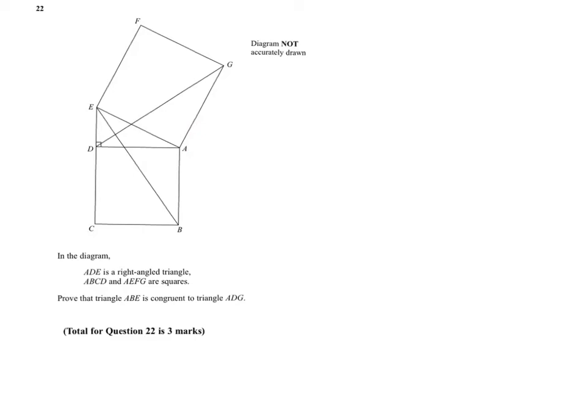If we look at the sides that we're talking about, we're told that ABCD and AEFG are both squares. So therefore, we can start looking at AD, and we can say that that is equal to AB on the other triangle, because they are sides of a square.